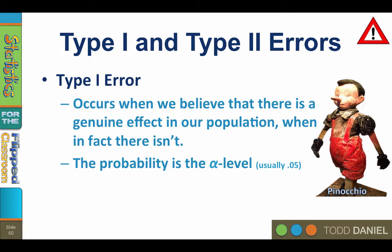Peer review of submitted journal articles and retesting hypotheses, especially anomalous findings, are ways to guard against the publication of Type 1 errors. The probability of making a Type 1 error is the alpha level, typically p equals 0.05 or 5 percent. To decrease the chance of a Type 1 error, you could change the alpha level from 0.05 to 0.01. However, decreasing alpha also increases the possibility of making a Type 2 error.